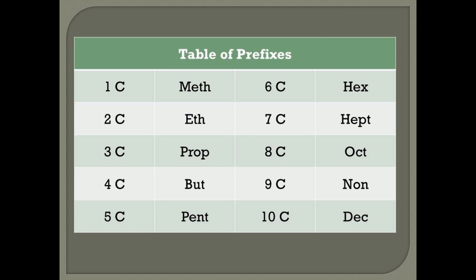Depending on the number of carbon atoms in the chain, you get different prefixes. If it's one carbon, the prefix is meth and the molecule is methane. Two carbons: eth, ethane. Three carbons: prop, propane. Four carbons: but, butane. Five carbons: pent, pentane. Six carbons: hex, hexane, as we saw. Seven carbons: hept, heptane. Eight carbons: oct, octane. Nine carbons: non, nonane. Ten carbons: dec, decane. And after that we have undecane, dodecane, tridecane, tetradecane, pentadecane, hexadecane, heptadecane, octadecane, nonadecane, and icosane, and then we can keep going.